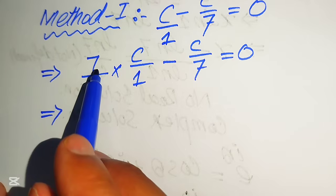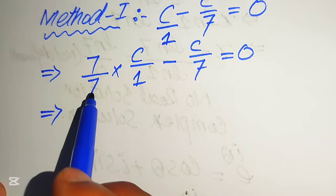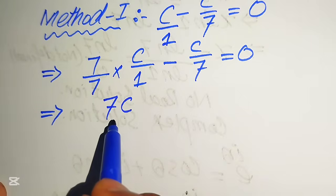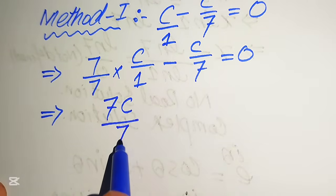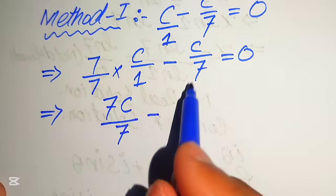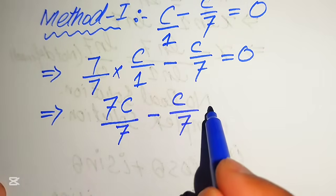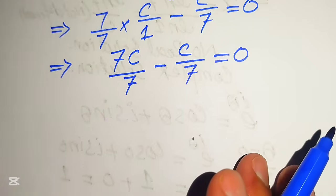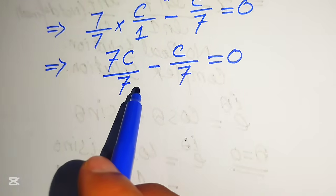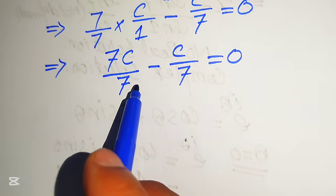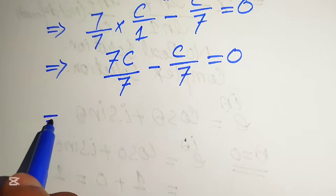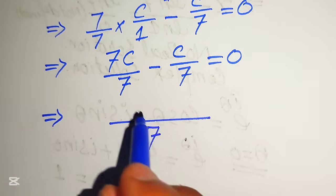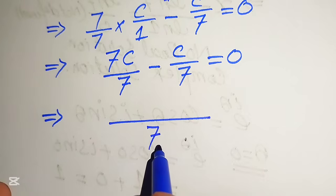We multiply numerators with numerators and denominators with denominators. One times c gives seven c, and seven times one gives seven, so we have seven c over seven minus c over seven equals zero. Since both terms now have the same denominator, we can take the LCM, which is seven.